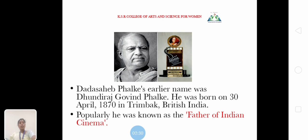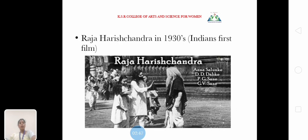Dadasaheb Phalke's earlier name was Dhundiraj Govind Phalke, who was born on 13 April 1870 in Trimbak, British India. Popularly, he was known as the father of Indian cinema. Raja Harishchandra in 1913 was India's first film.